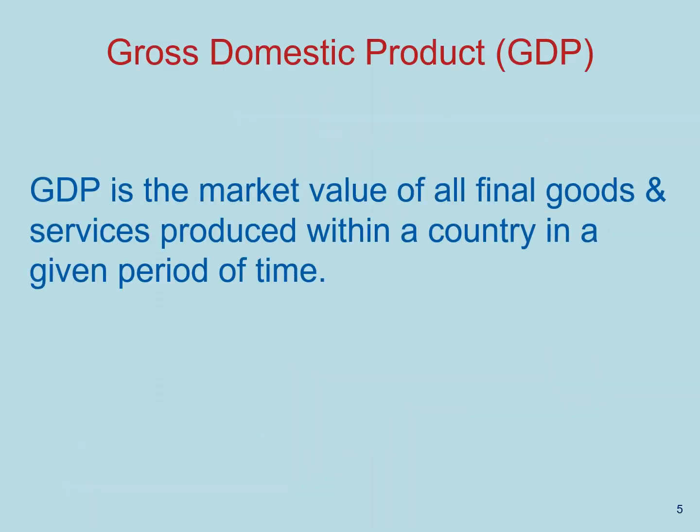GDP is the market value of all final goods and services produced within a country in a given period of time. Let's think about this concept of market value. GDP only measures economic activity that takes place in markets. Anything that's sold illegally will not be measured. Anything that you do at home that does not go to a market will also not be measured.